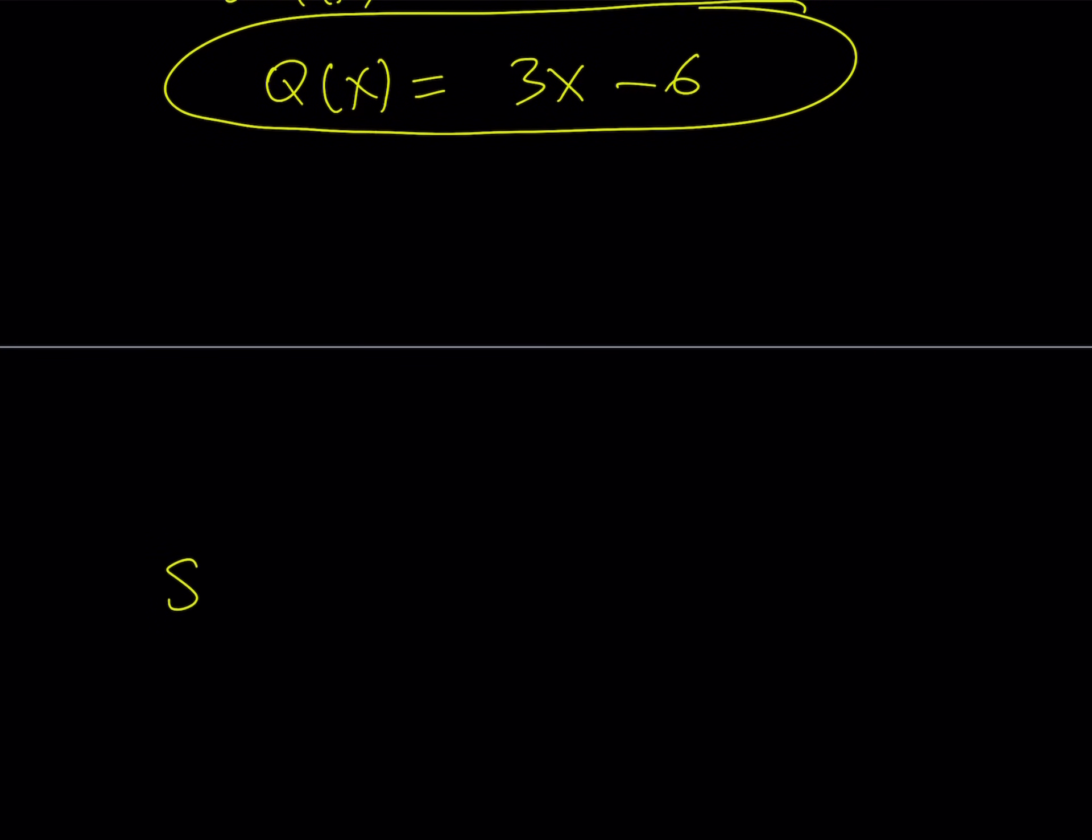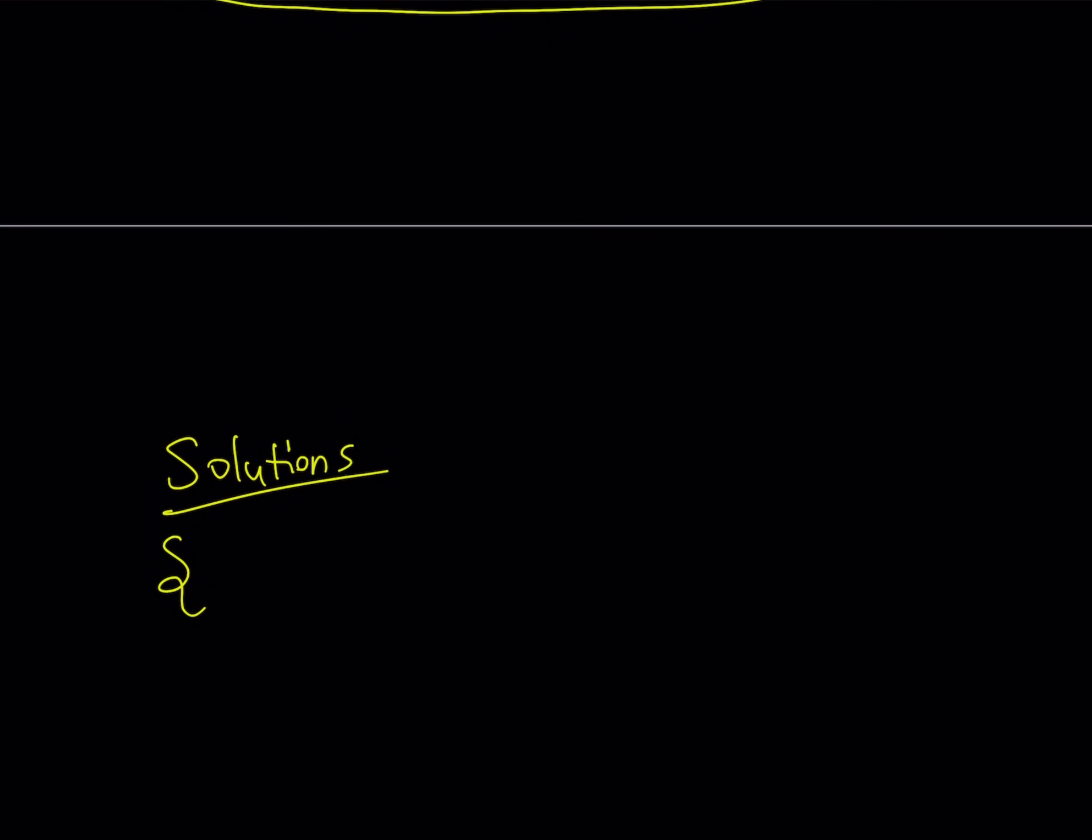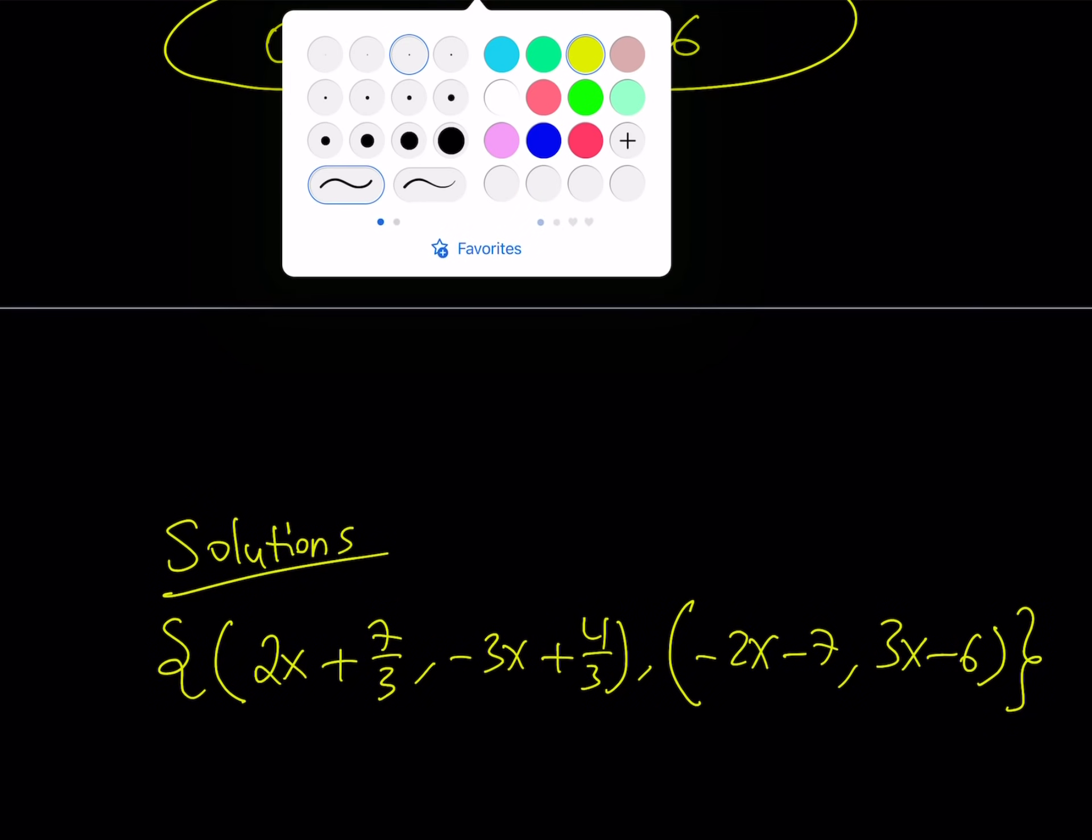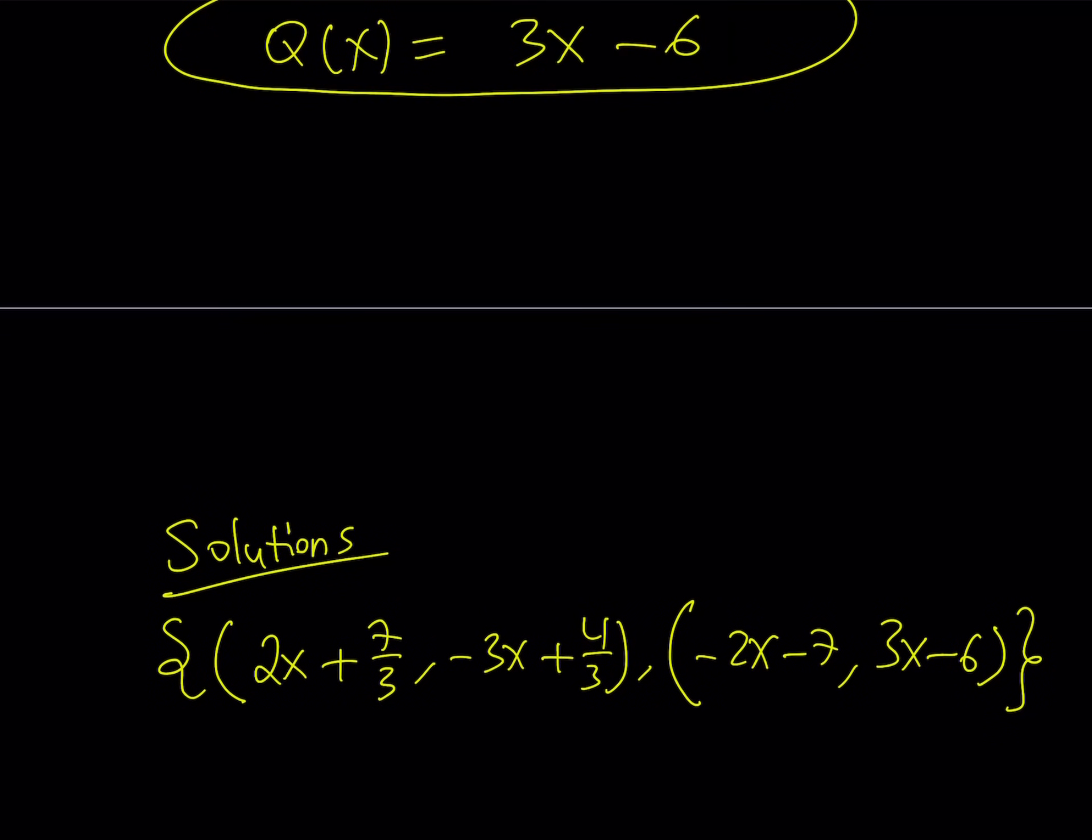Let's go ahead and write down the solution or solutions as ordered pairs. So the solutions are going to look like this with P(x) being the first one. If P(x) is 2X plus 7 thirds, then Q of X is going to be negative 3X plus 4 thirds. And if P of X equals negative 2X minus 7, then Q of X is going to be 3X minus 6. And let's not forget to close the braces because I believe last time I forgot to close the braces.